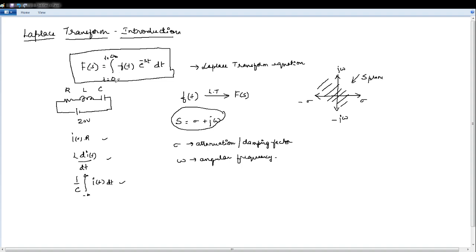Now the lower limit as you can see is T is equal to 0. So if you had T is equal to minus infinity it will be called a bilateral Laplace transform. But in this case since T starts from 0 and essentially infinity this type of Laplace transform is called as unilateral Laplace transform.